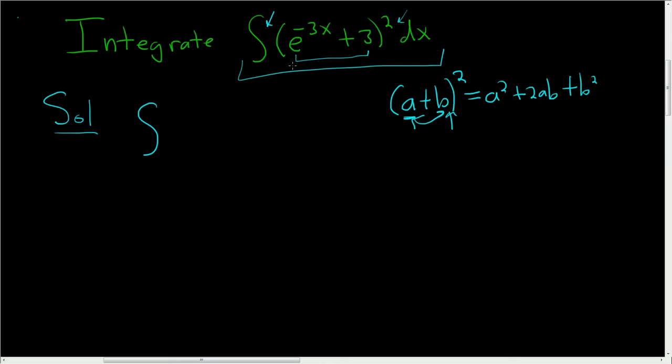So in our case, this is a, and this is b. So we're going to get e to the negative 3x squared. Now when you square this, you just get e to the negative 6x. So the first term will be e to the negative 6x.